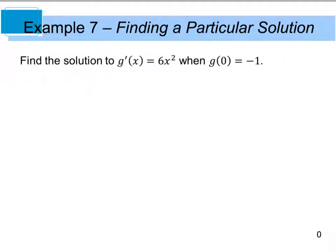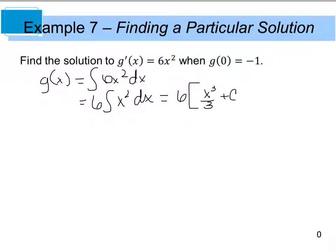Example 7 says to find the solution to g prime of x equals 6x squared when g of 0 equals negative 1. So I'm going to go through the same process, and I'm going to actually be looking for g of x. And this is going to be found by taking the integral of 6x squared dx. Now, if you don't want to integrate with that 6 in there, you can rewrite that as 6 times the integral of x squared dx. So when we solve this, I have 6 times the integral of x squared, which is x cubed divided by 3 plus c.